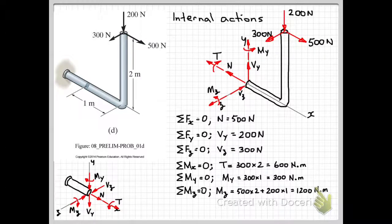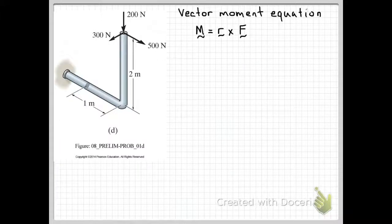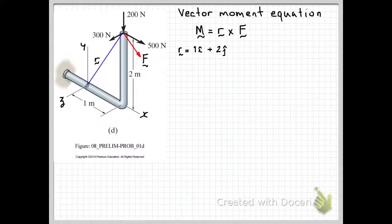Another way to get directly to these internal actions from our external loads is to use the vector moment equation. The vector moment equation says that the vector moment is equal to R cross F, where R is the position vector and F is the force vector. The position of our forces relative to the point at which we want to know the moment is our position vector R, and the three forces can be shown as a resultant force F. We need our coordinate system with axes x, y and z. Our position vector in vector notation is 1 meter in the x direction, so 1i, plus 2 meters in the y direction, so plus 2j — giving position vector 1i plus 2j.